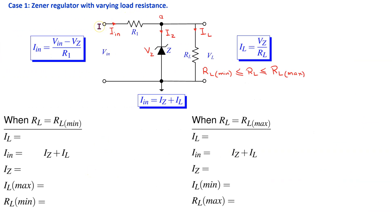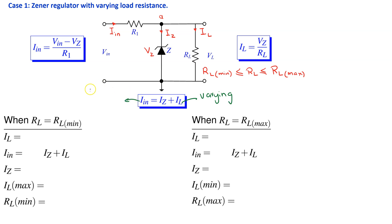Consider Case 1: the Zener regulator with varying load resistance. The Zener diode provides a constant output voltage VZ across the load for a range of RL values. When RL is varying, IL = VZ / RL depends on RL, so IL is varying. However, IIN = (VIN − VZ) / R1 is independent of RL, so IIN is unchanged. As a consequence, IZ is also varying.